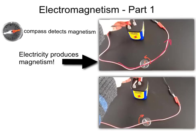Here we observe that electricity can produce magnetism, but can magnetism produce electricity?